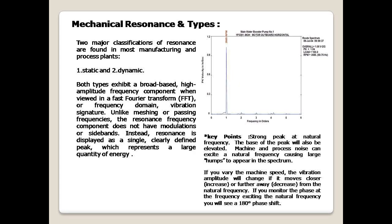Two major classifications of resonance are found in most manufacturing and process plants: static and dynamic. Both types exhibit a broad-based, high amplitude frequency component when viewed in a fast Fourier transform (FFT) or frequency domain vibration signature. Unlike meshing or passing frequencies, the resonance frequency component does not have modulations or sidebands. Instead, resonance is displayed as a single, clearly defined peak, which represents a large quantity of energy.